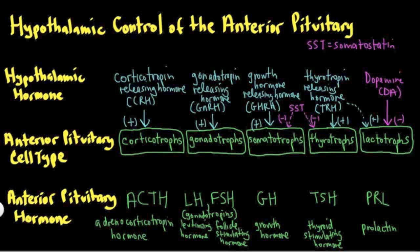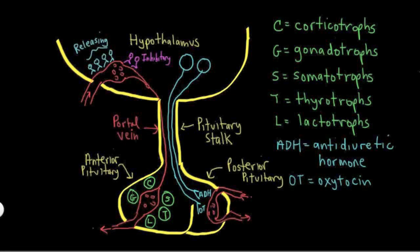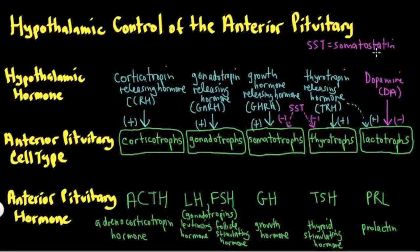To summarize: we have releasing hormones — CRH, GnRH, TRH, and GHRH — that travel down the portal system and act on their respective receptors on these cell types to stimulate hormone release. We also have two major inhibitory hormones: somatostatin and dopamine, with dopamine being the major inhibitor of prolactin release from lactotrophs. You should be able to list the major hypothalamic hormones — CRH, GnRH, GHRH, TRH, somatostatin, and dopamine — as well as the major anterior pituitary hormones: ACTH, the gonadotropins LH and FSH, growth hormone, TSH, and prolactin. That concludes the lecture on hypothalamic control of the anterior pituitary.